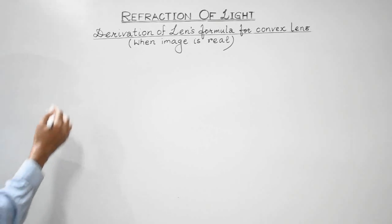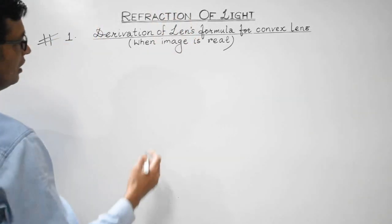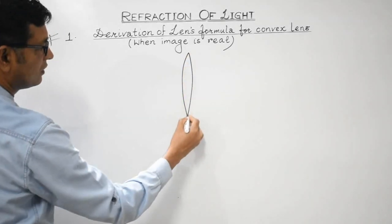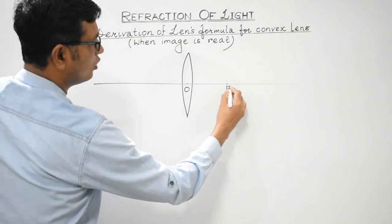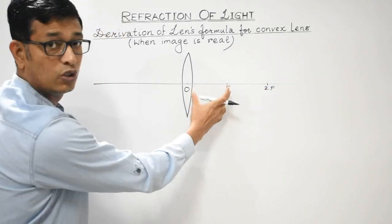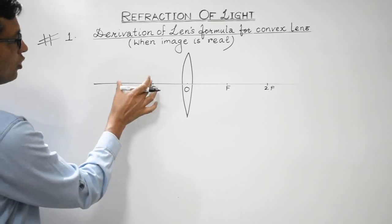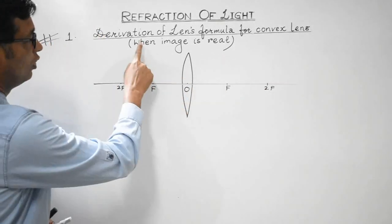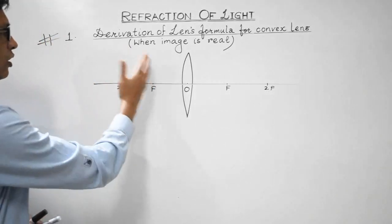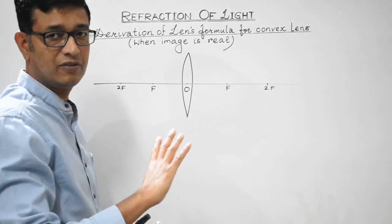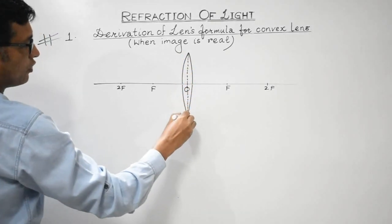Case 1 is when the nature of the image obtained is real. When the object is placed beyond the focus in front of a convex lens, the nature of the image obtained is always real. We will prove the lens formula for this case. The object can be placed anywhere beyond F, and in such a case the image obtained would be real. This is the reference line from where the deviation path will be considered.